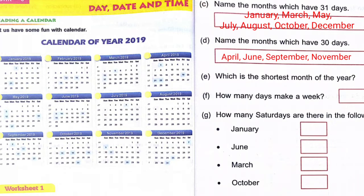(e) Which is the shortest month of the year? That is February, which has 28 days normally, and 29 days in a leap year. (f) How many days make a week? Everyone knows — there are seven days in a week.